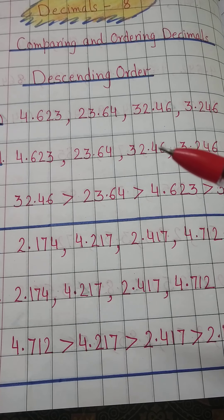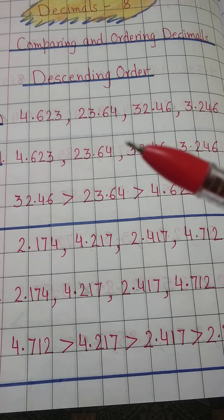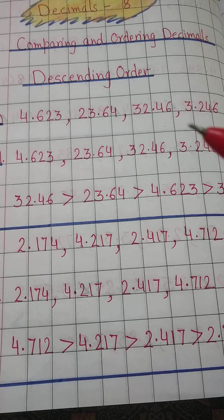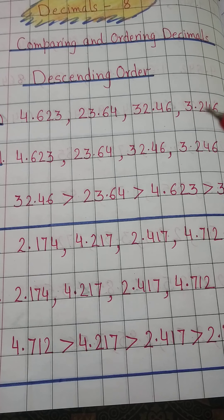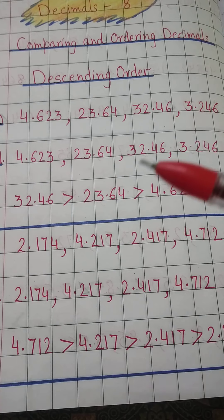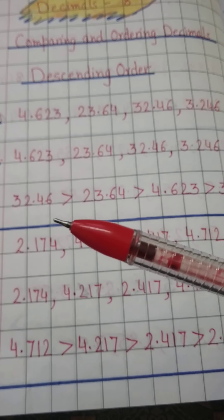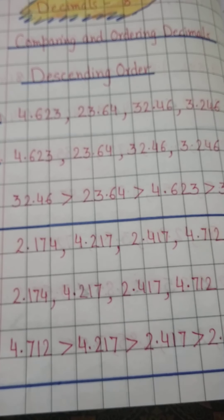So no need to look for numbers after decimal. Here we have 4, 23, 32, 3. Think in your mind - descending order means you have to write the greatest first. Which is the greatest number? 32. So we will write 32.46.